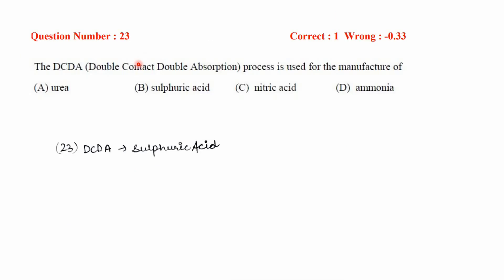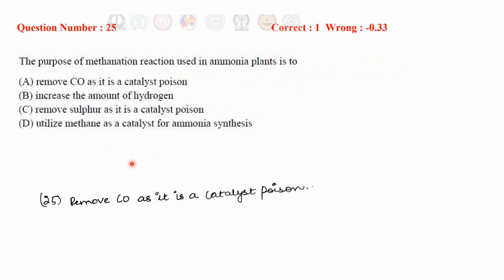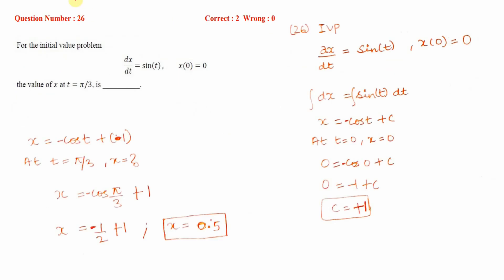The DCDA process is used for the manufacturing of sulfuric acid. For matching polymerization processes with polymers: free-radical polymerization is used for PVC (polyvinyl chloride), Ziegler-Natta polymerization is used for polypropylene, and condensation polymerization is used for Nylon 66 — so the correct option is B. The purpose of the methanation reaction in ammonia plants is to remove carbon monoxide, as it is a catalyst poison.